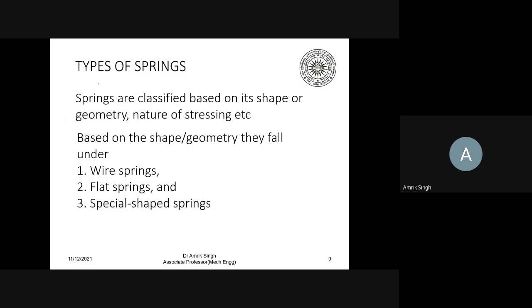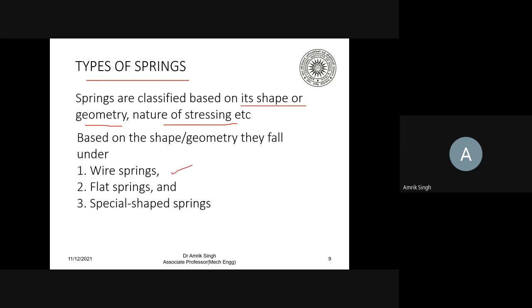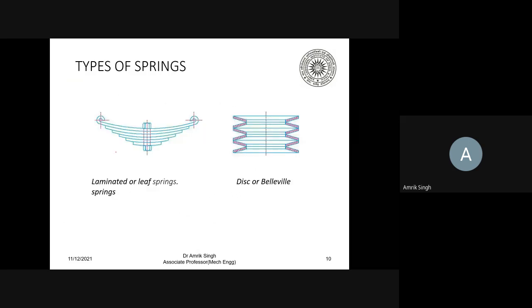Springs are classified based on shape, geometry, or the nature of the stress. Based on shape, they can be coiled springs, flat springs, and special-shaped springs — such as laminated springs and disc springs.